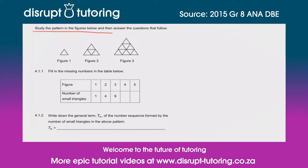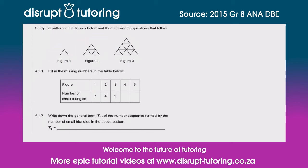Study the pattern in the figures below and then answer the questions that follow. In figure one we have a single triangle, then we've got four triangles, and then a combination of triangles — five, seven, nine. So we've got nine triangles in that third picture.